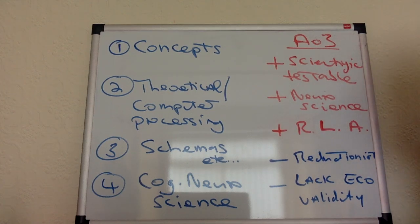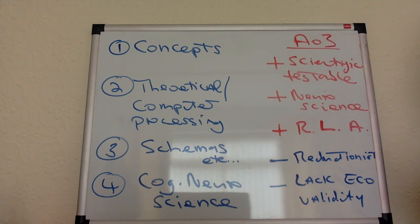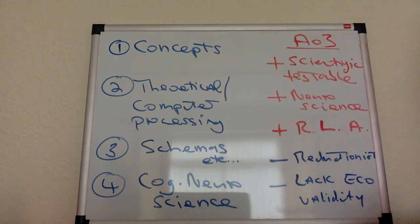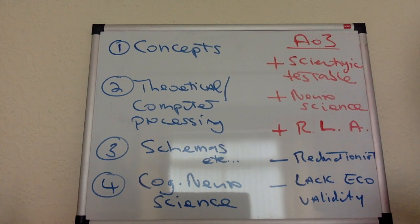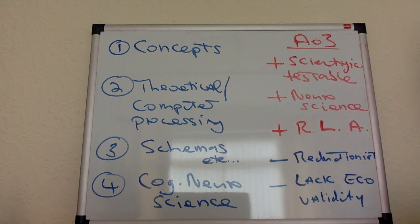Okay everyone, let's get going with the cognitive approach in psychology for 16 marks. This approach seems quite scary to students, but actually if you keep it simple and very discreet, making sure you are analysing things separately, you can do very well with this. It's a very controversial thing because this cognitive model has moved into brand new directions, and there's a big AO3 for that which I'm going to leave until the very end of the video.